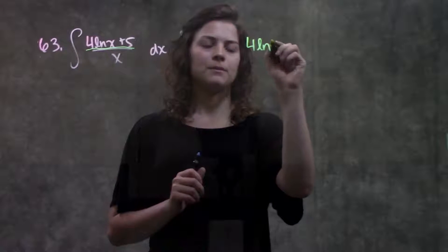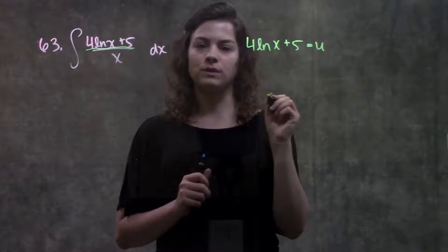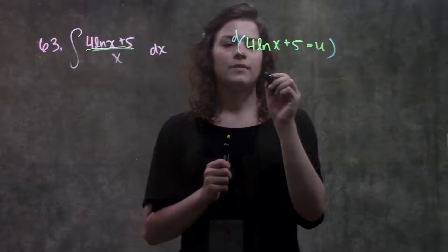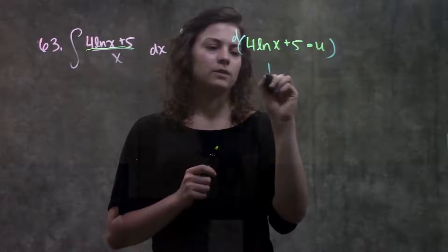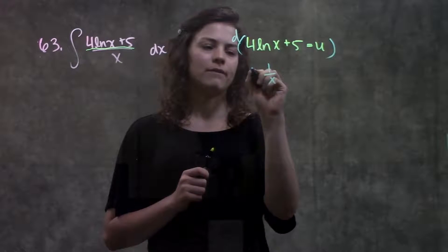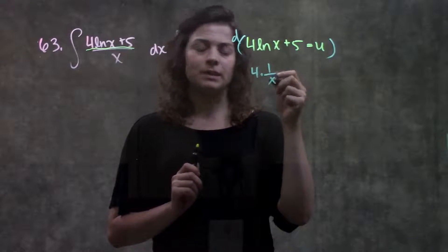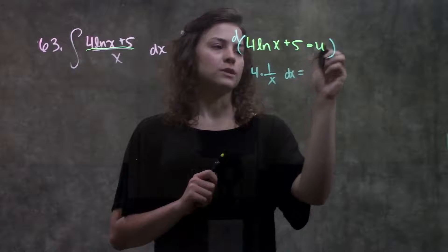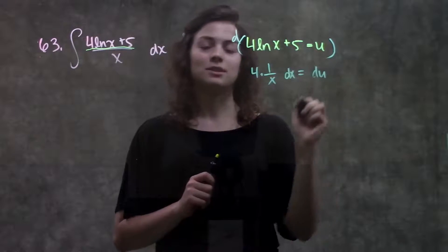So it becomes 4 ln x plus 5 equals u, taking the derivative of both sides. On the left here, derivative of ln x is 1 over x, remember I still have this 4 on the front, derivative of 5 is just 0, so this becomes 4 over x dx is equal to derivative of u which is just du.